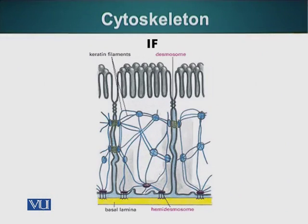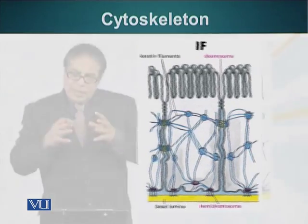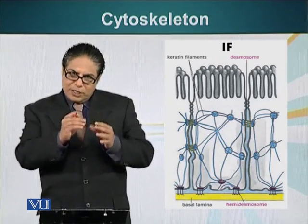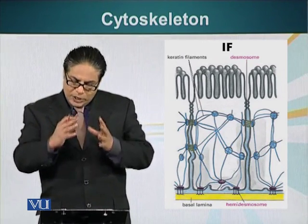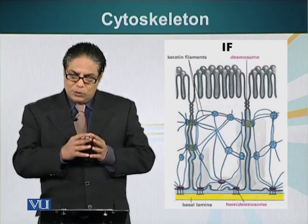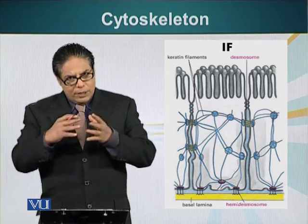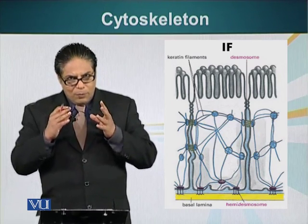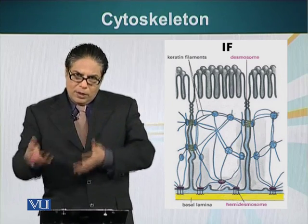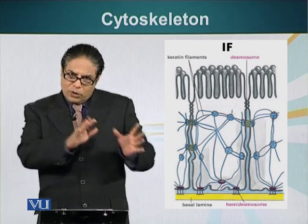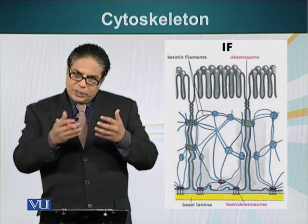Let me show you a diagram of how they do that. There is a network of intermediate filaments in the three-dimensional space of the cell. These intermediate filaments terminate at special points on the plasma membrane called desmosomes or hemidesmosomes. Hemidesmosomes and desmosomes have one single function: to connect cells to adjacent cells or the extracellular matrix.